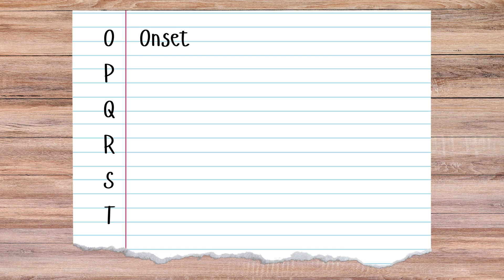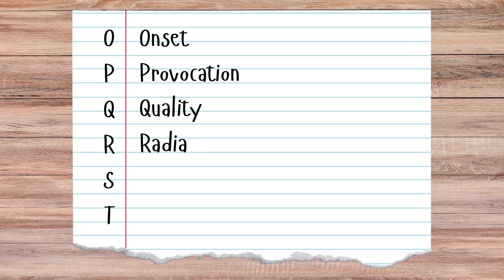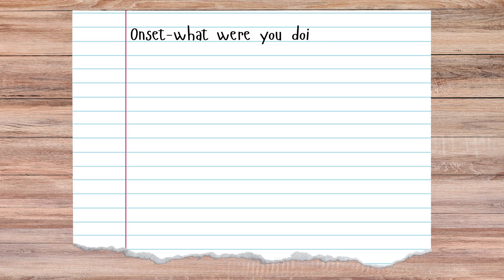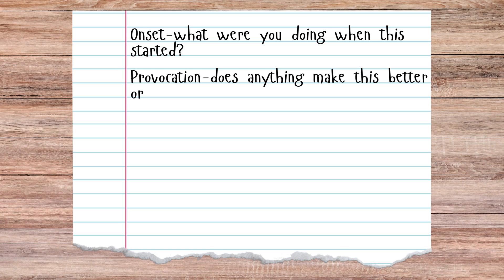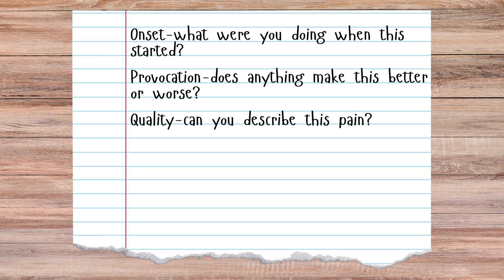O is for onset, P is for provocation or palliation, Q is for quality, R is for radiation, S is for severity, and T is for time. So the way I'll phrase these questions: How long ago did this chest pain start? Was it sudden or was it gradual? For the P — palliation and provocation — is there anything that makes this chest pain better or worse? For Q, quality: can you describe this pain to me? If they aren't able to really describe that pain, try to get them to use one or two word descriptions.